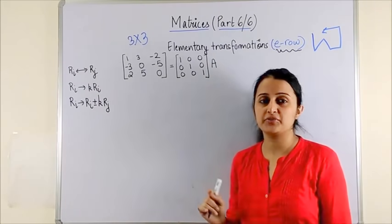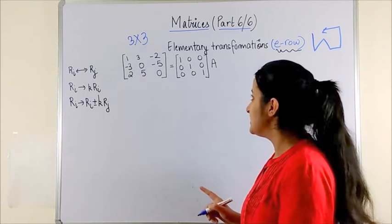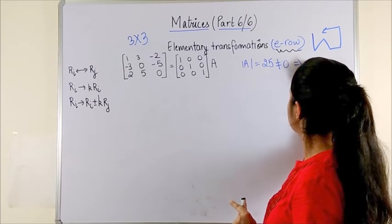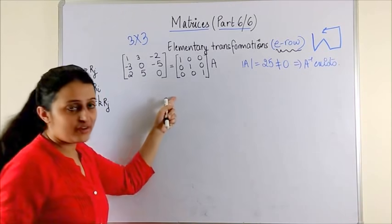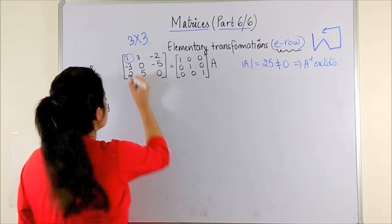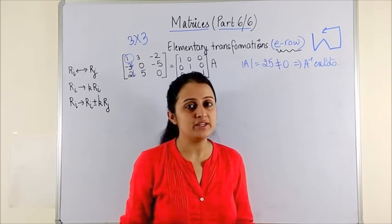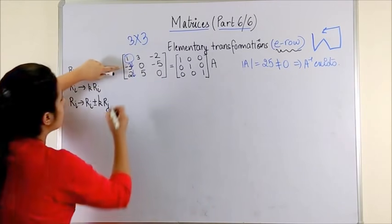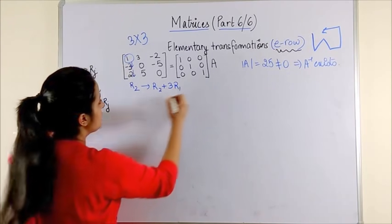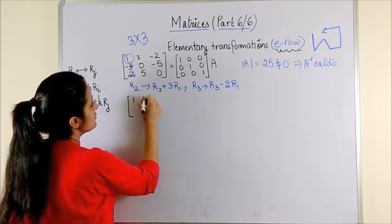Moving on to finding the inverse of a 3x3 matrix. The first step is checking the determinant of A, which turns out to be 25 — not 0 — implying A inverse exists. We are going to follow the same pattern. A11 is already 1, so we target A21 (minus 3) and A31 (which is 2). We apply rho 2 = rho 2 plus thrice of rho 1 to make A21 zero, and rho 3 = rho 3 minus twice of rho 1. The first row stays as it is.